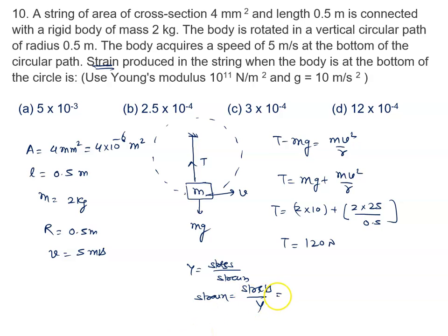The stress is given by force upon area. So we will write here tension upon area into Y. What is the value of the tension? Tension is 120. What is the area? 4 into 10 raised to the power minus 6. What is the Young's modulus? Young's modulus is 10 raised to power 11. So when we solve it we will get 3 into 10 raised to power minus 4.